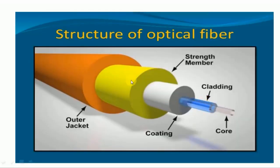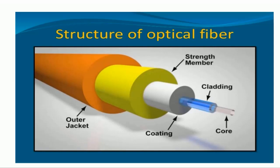The structure of optical fiber consists of the innermost tube called the core, which is the central tube of very thin size. It is made up of an optically transparent dielectric medium and carries the light from transmitter to receiver. Its diameter is very small, ranging from 5 micrometers to 100 micrometers.